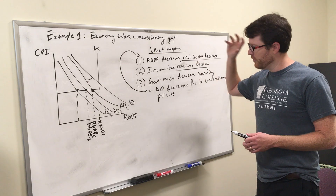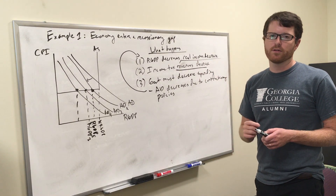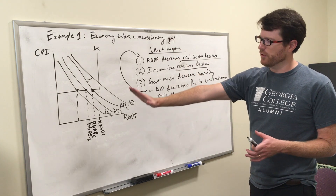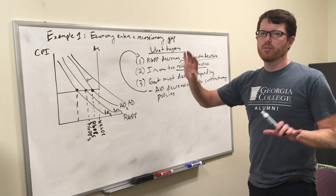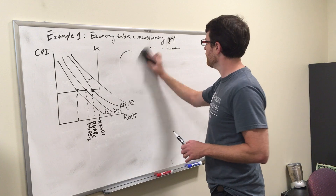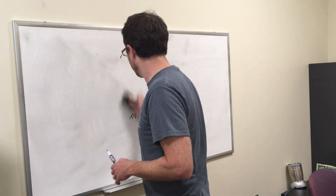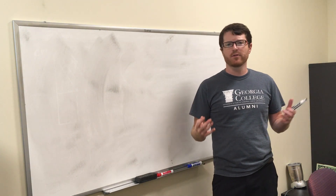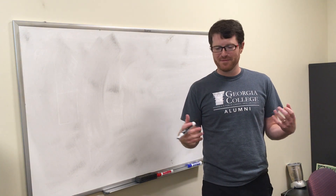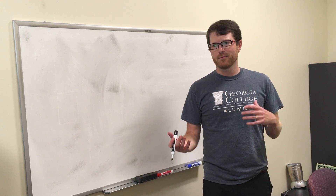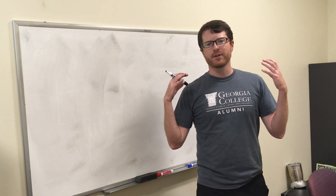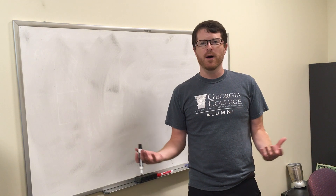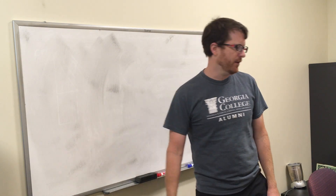Let's imagine scenario one: the economy enters a recessionary gap for whatever reason. Here's our real GDP, here's our CPI, here's our aggregate supply, here's our natural level, and here is our aggregate demand. That's where we are to begin, and suddenly the economy enters a recessionary gap — aggregate demand decreases to a point where the economy is now producing less than its full potential.